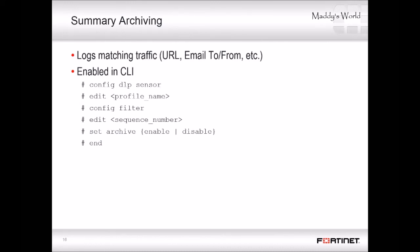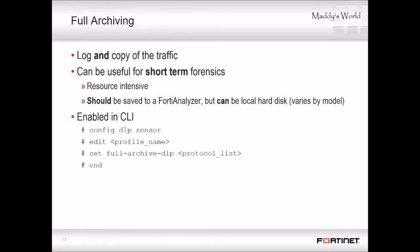DLP can also record traffic summaries — that is, logs — and if enabled, the full files and messages. Summary archiving records a log message that summarizes the traffic and varies by protocol. For example, with an email message, the summary archive would contain the sender's email address, the recipient's email address, and the size. Full archive records the summary log but also a complete copy of the traffic, which can be very useful in forensic investigations. It's not meant for prolonged use, however, as depending on what you're archiving, full archiving can require large amounts of disk, CPU, and RAM resources.